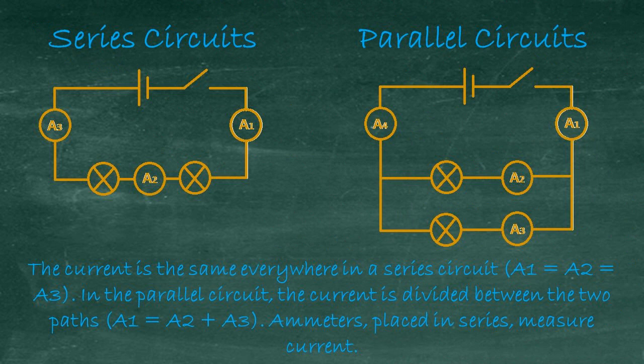Circuits can be built in one of two ways. In a series circuit, each component follows on in the same path, one item after another. In a parallel circuit, the two paths run adjacent to each other, so current can go through either the first lamp or the second lamp. The total current going into the parallel circuit measured by ammeter A4 is shared between the two branches. So A2 plus A3 equals A4, and the current going out equals the current coming in, so A4 equals A1.